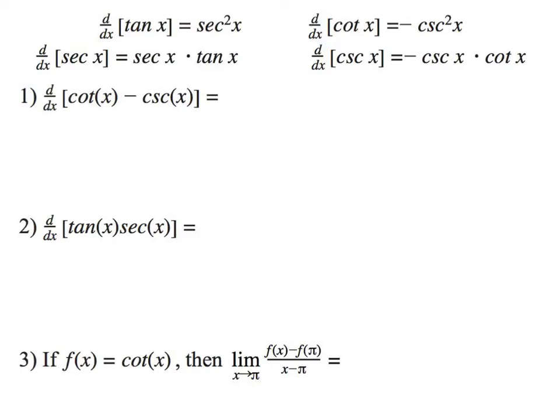A little trick you'll notice. Any trig function that has the word co in it has a negative answer. For instance, cosine is a negative sine. Cotangent is a negative cosecant squared. Cosecant is a negative cosecant cotangent. So if it has the word co in it, it has a negative derivative answer.